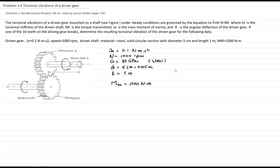Therefore, the spring constant is k = π G/(32L) times d to the fourth, where G is the shear modulus.